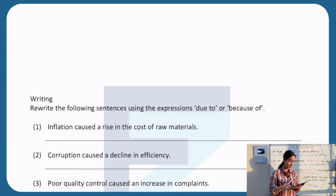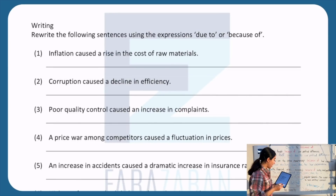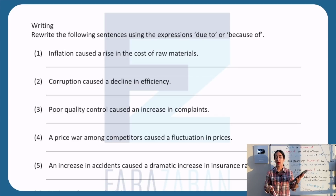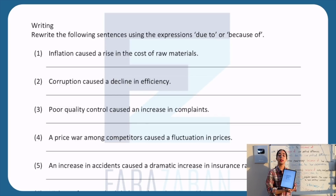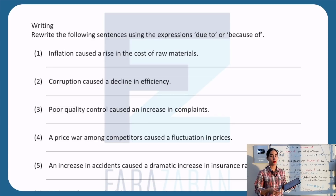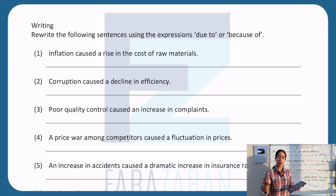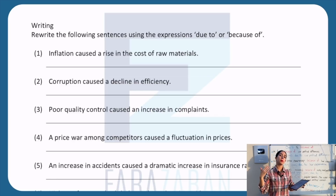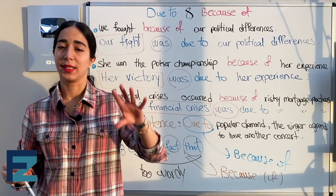Now for the next section: there are six sentences. I want you to write each one twice — once with 'because of' and once with 'due to,' making the necessary changes. This is a challenge especially for IELTS and TOEFL students. You'll have twelve sentences total. Post your answers in the comments. Also do the fill-in-the-blank exercises from earlier.